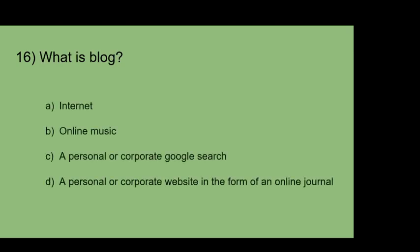What is a blog? A: Internet. B: Online music. C: A personal or corporate Google search. D: A personal or corporate website in the form of an online journal. The answer is D — a personal or corporate website in the form of an online journal.